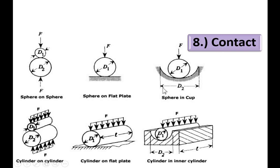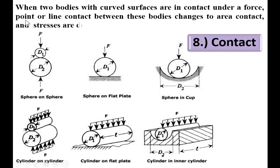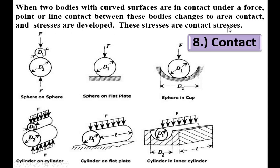Now, contact stress. These are different examples where contact stresses develop. The important point is that one of the components has a curved surface. When two bodies with curved surfaces are in contact under a force, the point or line contact between these bodies changes to area contact, and stresses are developed. These stresses are called contact stresses.